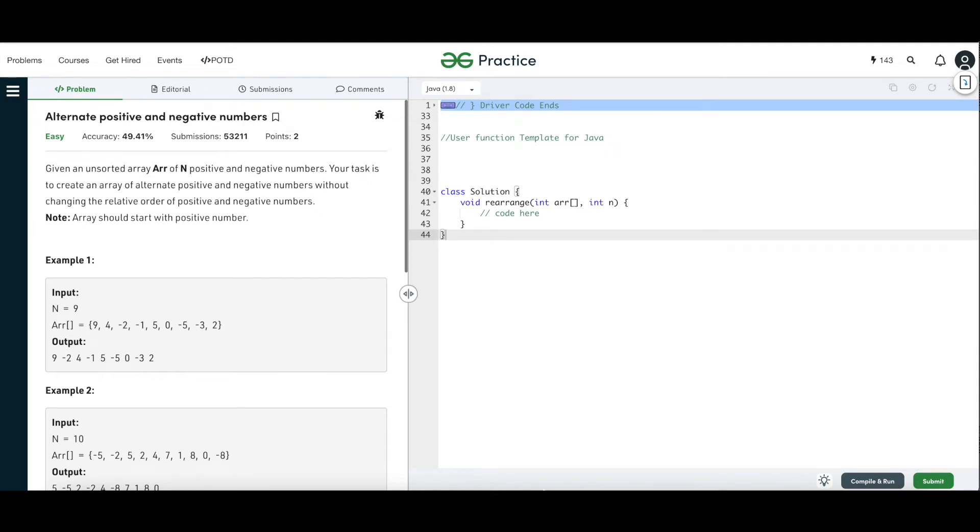Hello and welcome back to my channel Code with Ease. Today we are going to solve a question on rearrangement of array. It is called alternate positive and negative numbers.